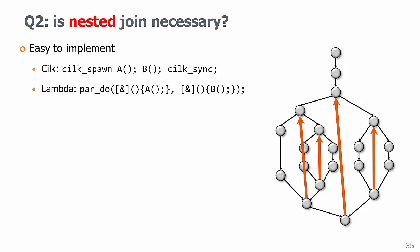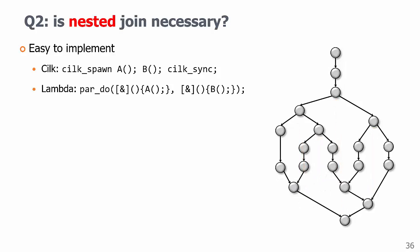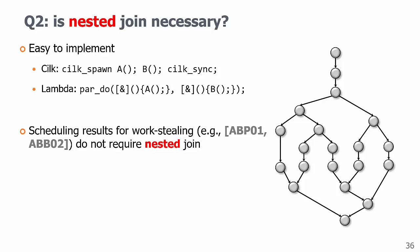But what if we don't nest them? Actually, it doesn't matter. Existing scheduling results for work stealing do not require nested join. So compared to binary forking, nested join is an option, not a requirement. We can use test and set to implement a join that does not correspond to a fork. This means that the binary forking model allows non-nested join.